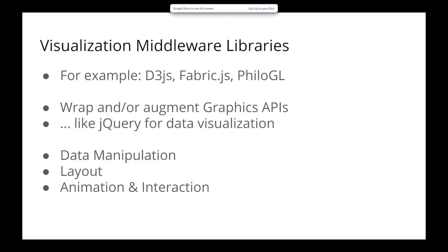The second layer of the visualization stack I'm calling visualization middleware libraries. D3.js I would put at this layer of the stack. Fabric.js is essentially a library you can layer on top of Canvas to do hovers and drags — things that aren't built into Canvas by the browser. And PhiloGL is the library used to make that cool airline globe visualization — it provides functionality on top of WebGL. What these middleware libraries all have in common is they either wrap or augment the graphics APIs the browser provides to you.